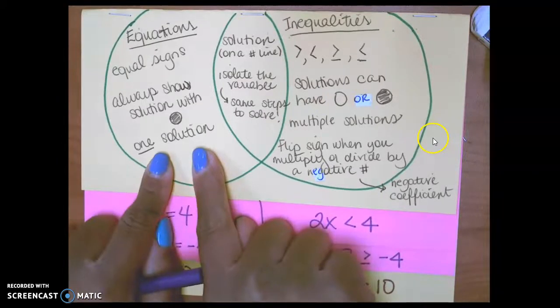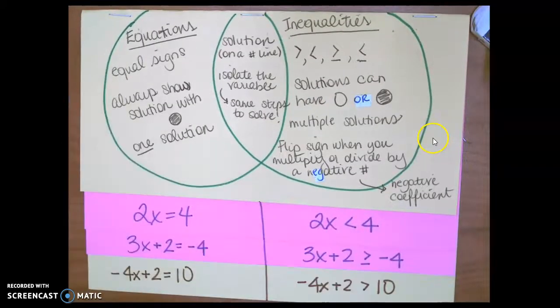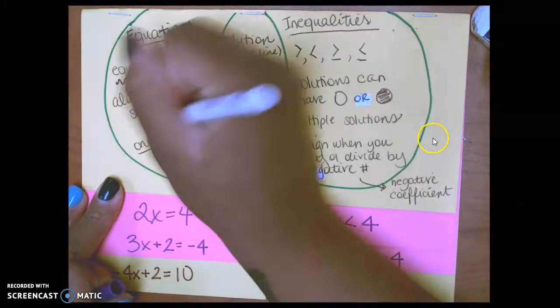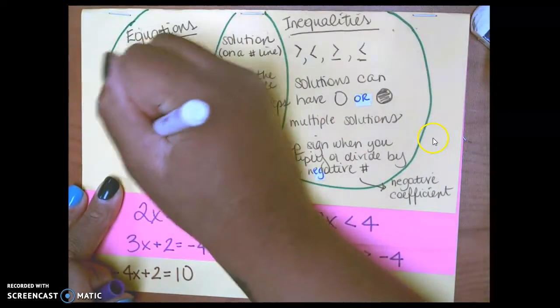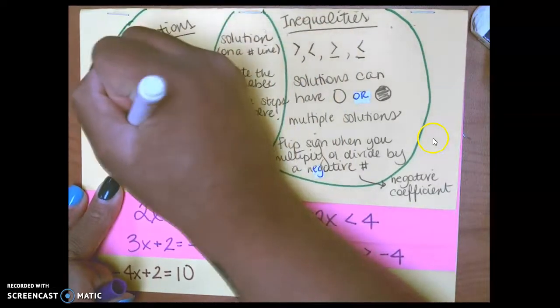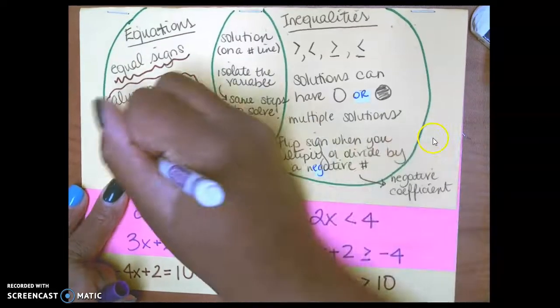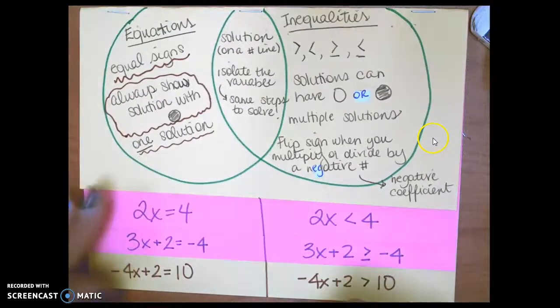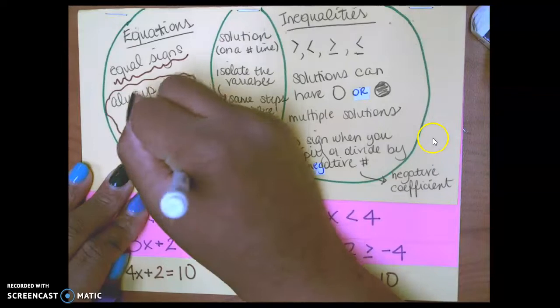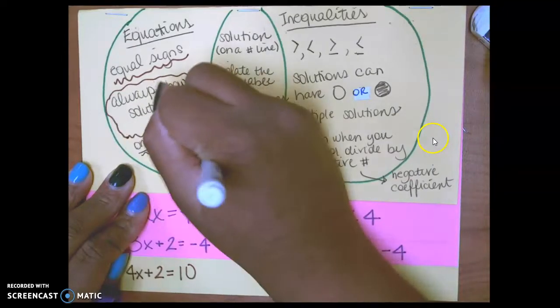So on the left here we have equations. Equations use equal signs. They always show a solution with a closed circle, and there's always one solution. For example, 5x minus 21 equals 37.